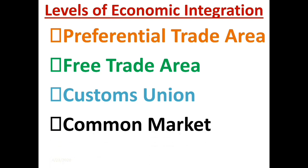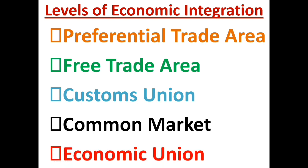In the common market, there is no internal tariff, a common external tariff, as well as free movement of factors of production — labor and capital. The final integration scheme is the economic union, where there is no internal tariff, common external tariff, free movement of labor and capital, and harmonization of fiscal and monetary policy. When an economic union adopts a common currency, we can have a monetary union as well.